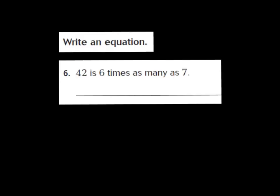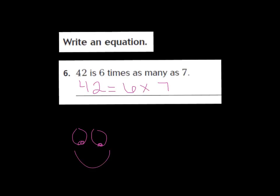Boys and girls, we need to write an equation that goes to this comparison sentence. Number 6 says '42 is 6 times as many as 7'. Go ahead and pause the video and work this one out on your own, then press play when you're ready to go over the answer with me. Our sentence said '42 is 6 times as many as 7', so now we have 42 equals 6 times 7. Did you get that one right? I am so proud of you — give yourselves a happy face. Good job.